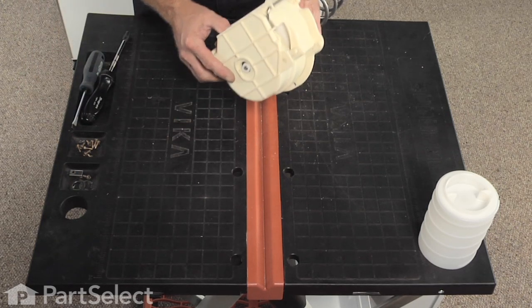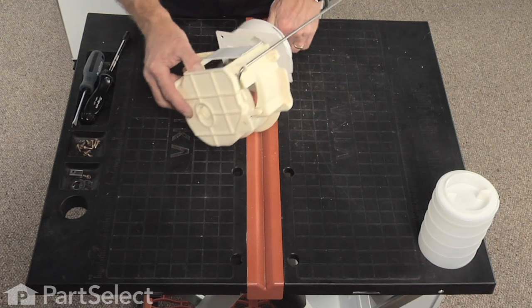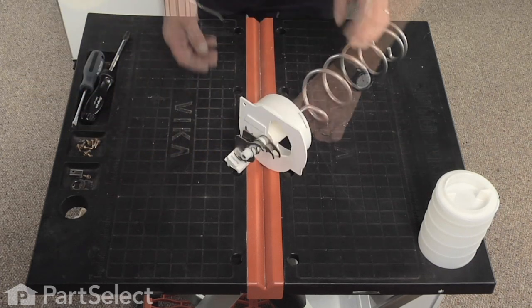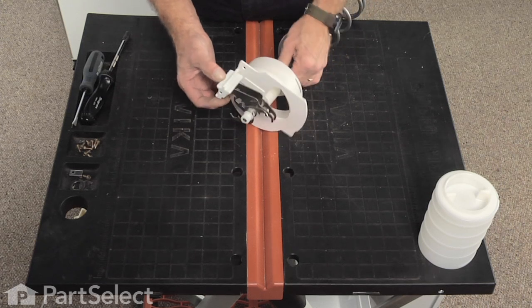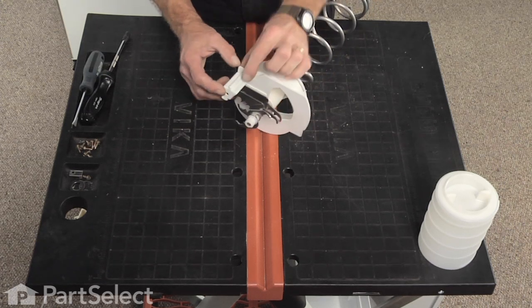Next we'll remove the auger from the front housing. Carefully slide it out, expose the crusher arms and the assembly.